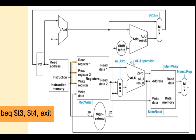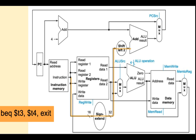After the branch instruction is decoded, the RS and RT registers — in this case T3 and T4 — are read into the ALU. The ALU subtracts the two registers and determines if the result is zero. If T3 and T4 are not equal, nothing happens and the PC is updated by 4 to point to the instruction after the branch. If T3 equals T4, the offset stored in the lower half of the instruction is sign-extended, shifted left to a word boundary, and added to the current value of the PC, forcing the PC to point to the branch target address. Branch instructions don't access data memory.